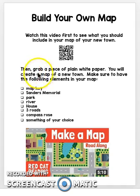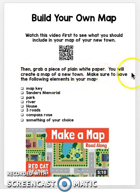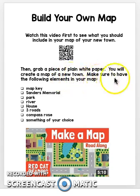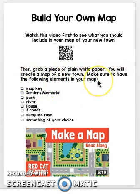Then you're going to grab a piece of plain white paper. You will create a map of a new town, and you want to make sure to have the following elements in your map. You will need to check these items off after you draw your map to make sure you included all of them.